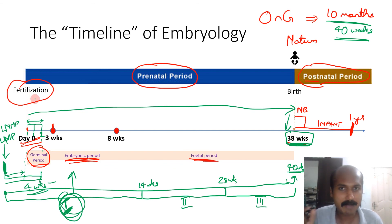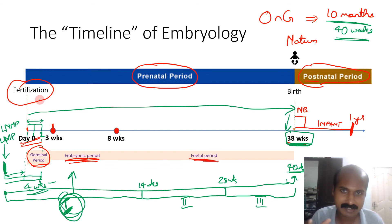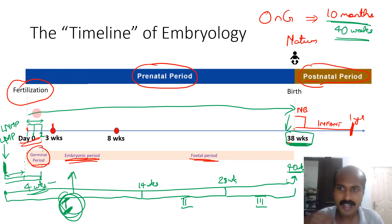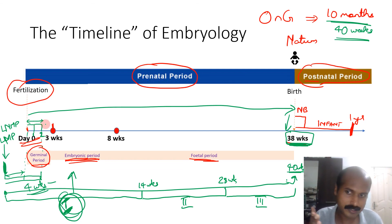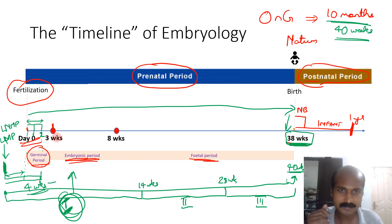That concludes the timeline of embryology. The course begins from fertilization, but before fertilization we need to know how gametes are produced. So the first classes will cover gametogenesis, then spermatogenesis, then oogenesis, and then we will set the stage for fertilization and proceed through what happens in each developmental week.